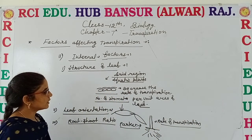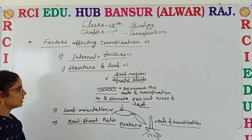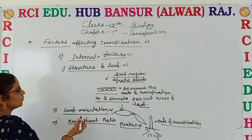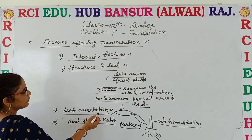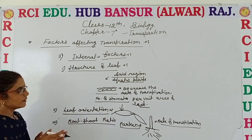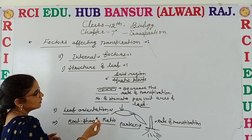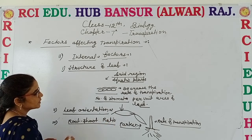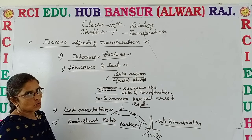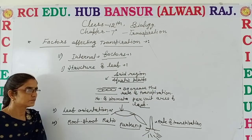So these are the three main internal factors which affect the rate of transpiration: structure of leaf, leaf orientation — which depends on its position relative to the sun — and root-shoot ratio. Okay students, goodbye. Thank you.